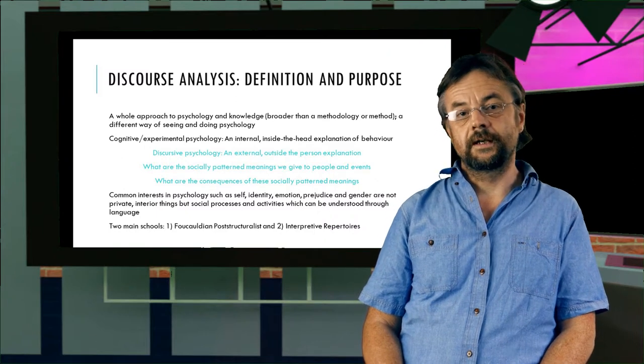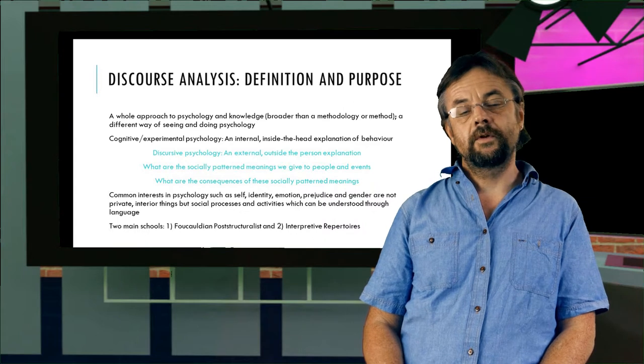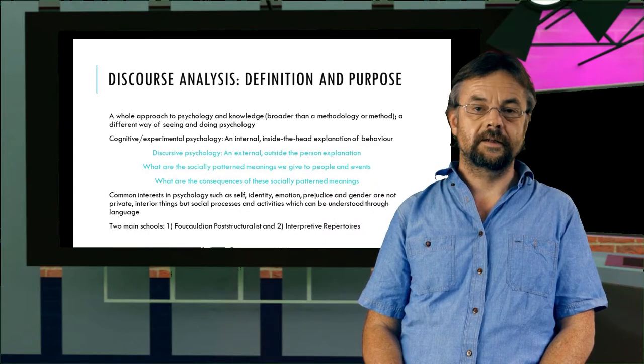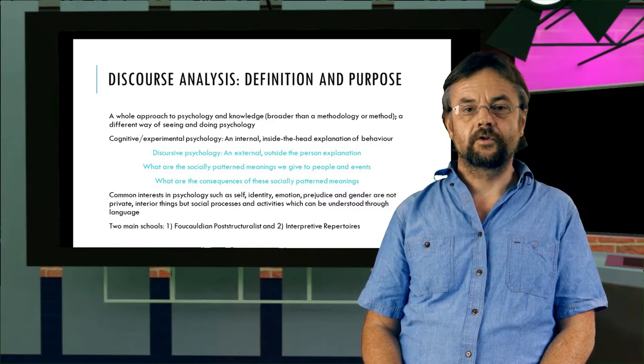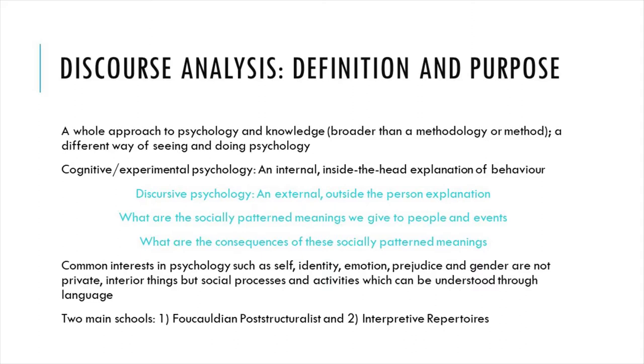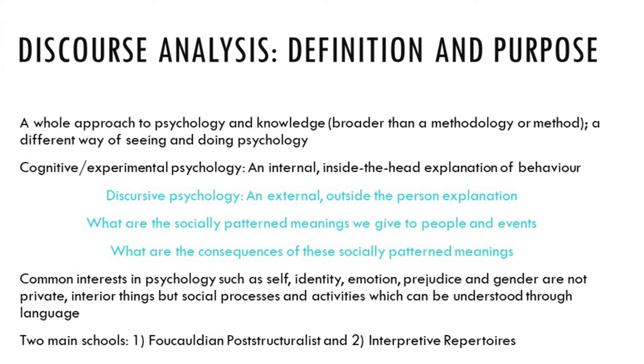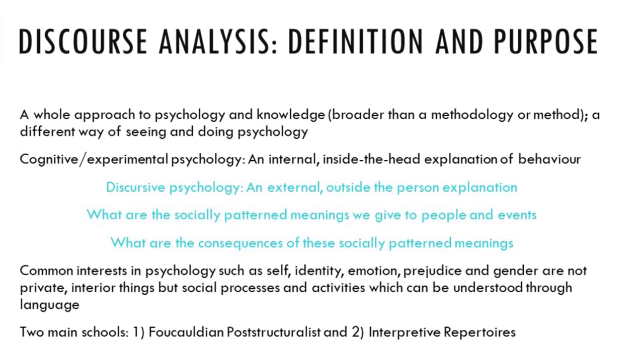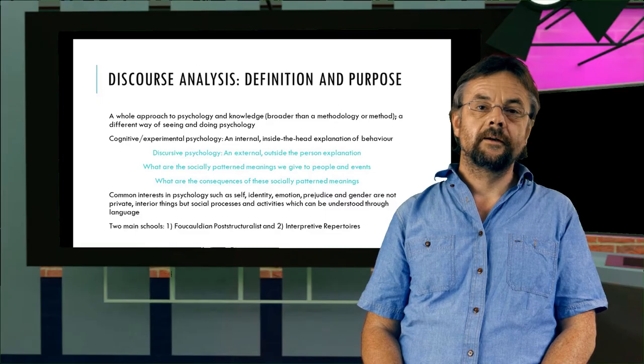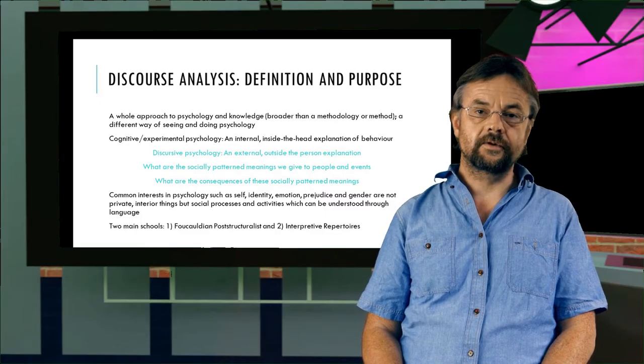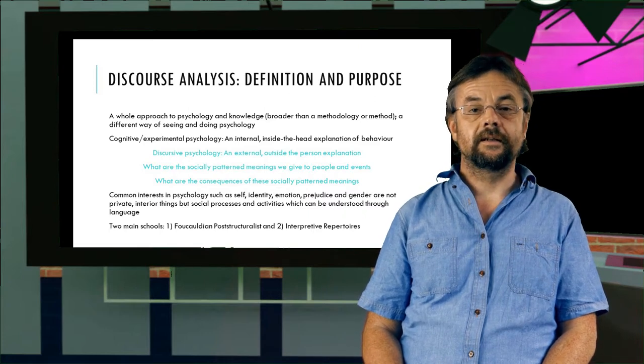An external outside-the-person explanation might be that binge drinking is a socially normative way in British or Australian culture to manage your emotions, or that commercial imperatives result in the promotion of a binge drinking culture in universities. Now remember our article back in week two on heterosexual casual sex? This was a good example of a paper that was looking at external outside-of-the-person explanations.